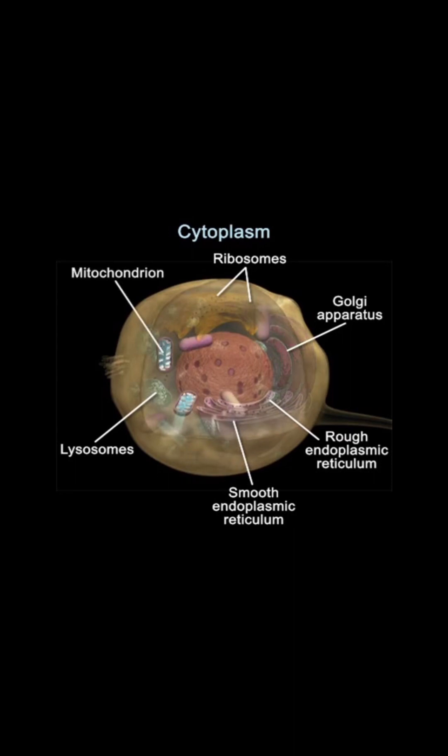The powerhouses of the cell are the mitochondria. ATP is synthesized in these membranous capsules containing large folded membranes encrusted with enzymes. The centrioles are a pair of hollow cylinders that are each made up of tiny tubules, and they function in cellular reproduction.